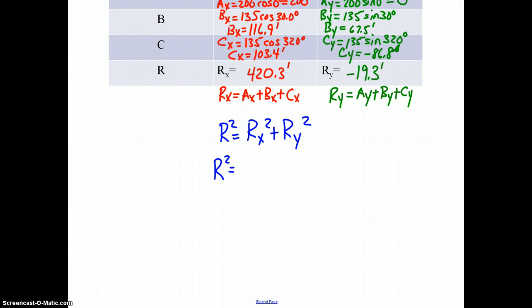So R squared would be 420.3 squared plus negative 19.3 squared. Add the squares, take the square root, pause the video if you need time to do the calculation. We get R equals 421 feet to three digits.